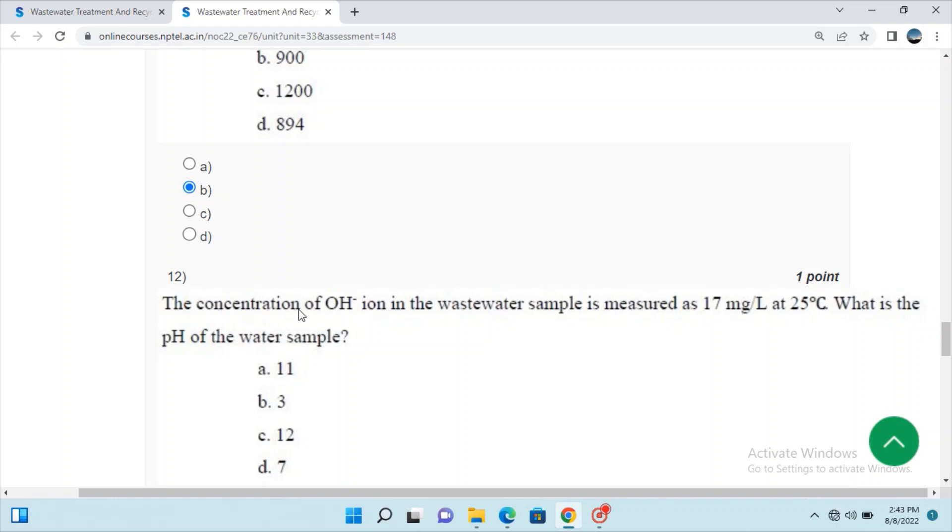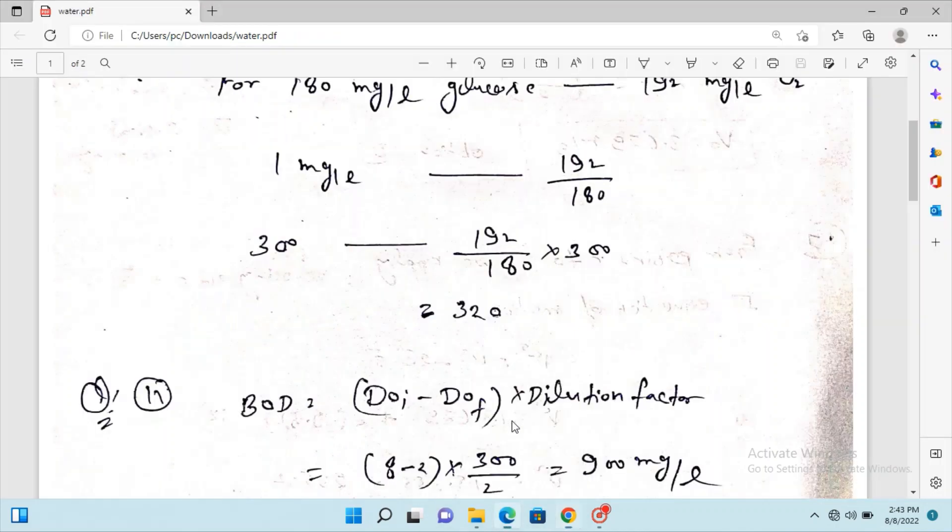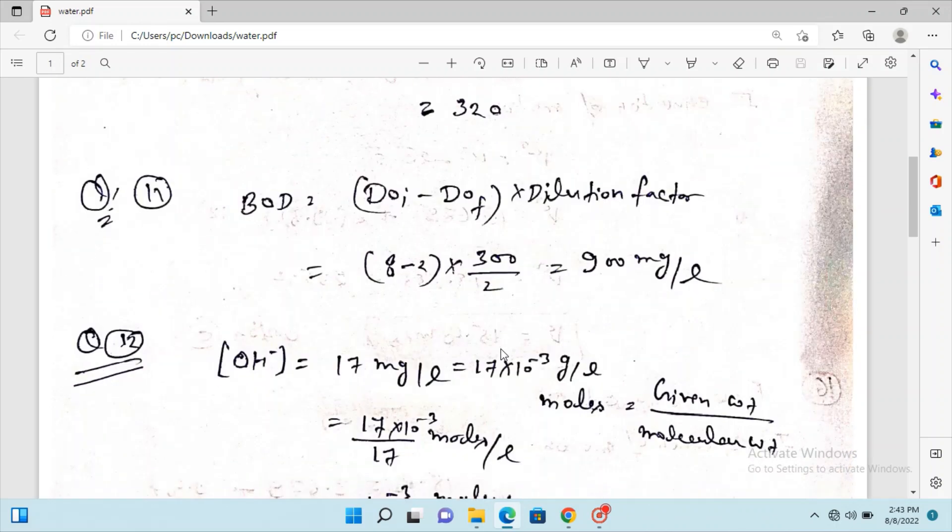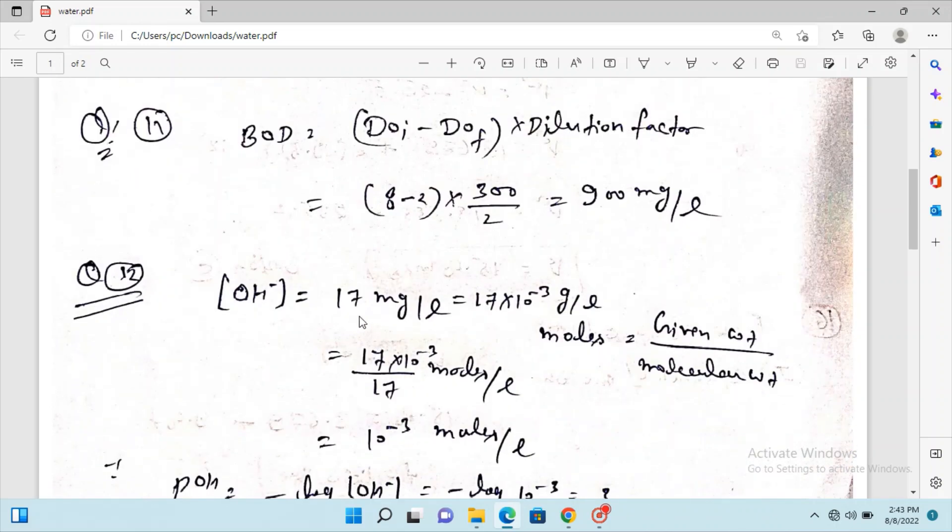Question 12: OH ion in a wastewater sample is measured as 17 mg per liter at 24 inches. What is the pH of the water sample? Now we can see the solution.